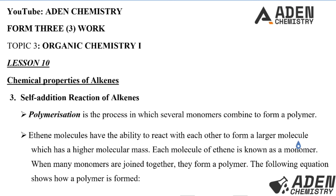Hello students, welcome. Previously in lesson 9 from topic 3, we were dealing with chemical properties of alkenes. We have done the first one and the second one. The first one was combustion of alkenes and the second one was addition reactions. The addition reaction is the reaction in which one molecule adds to another to form a single product.